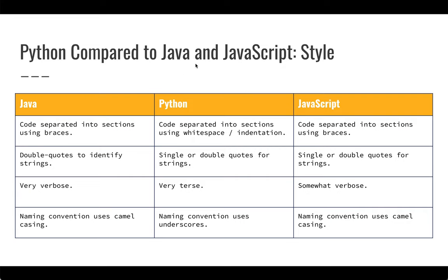I'm going to focus on how Python compares to Java, as I'm sure many of you are familiar with Java. In Java, you have code separated into sections using curly braces. In Python, we use indentation. There's always the question of spaces versus tabs - I think it's pretty clear that spaces won that battle. If you look at any huge repository, you find most people use spaces and tabs is a minority. I prefer spaces because it's just a little bit easier to keep it consistent.